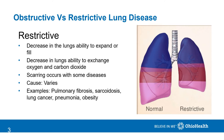Like obstructive lung disease, there are various types of restrictive lung diseases, but what these diseases have in common is that they prevent the lungs from being able to expand fully. In some restrictive lung diseases, scarring occurs in the lungs causing them to become stiff and preventing the efficient exchange of oxygen and carbon dioxide.